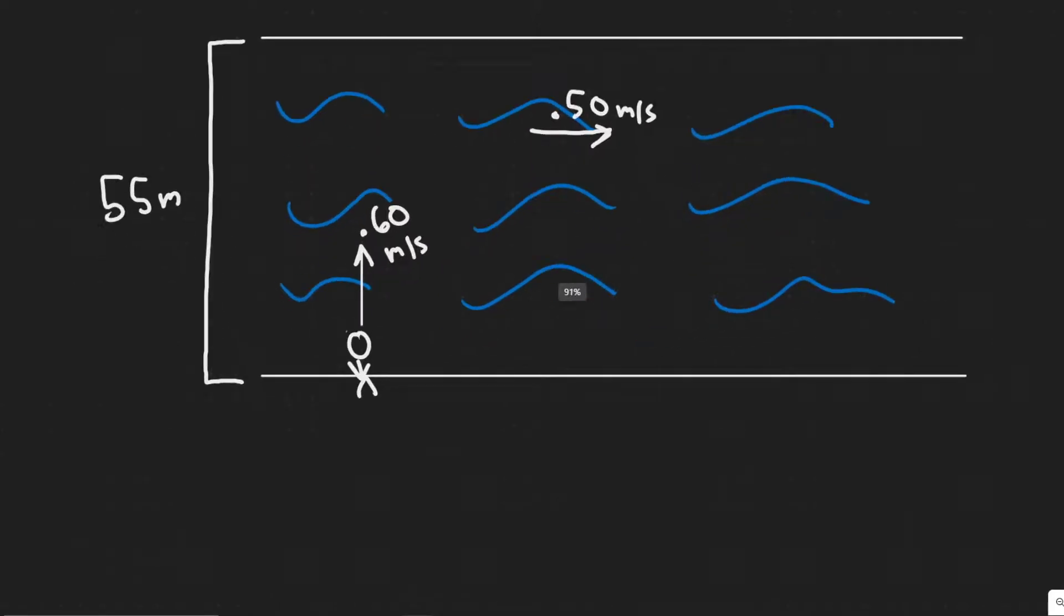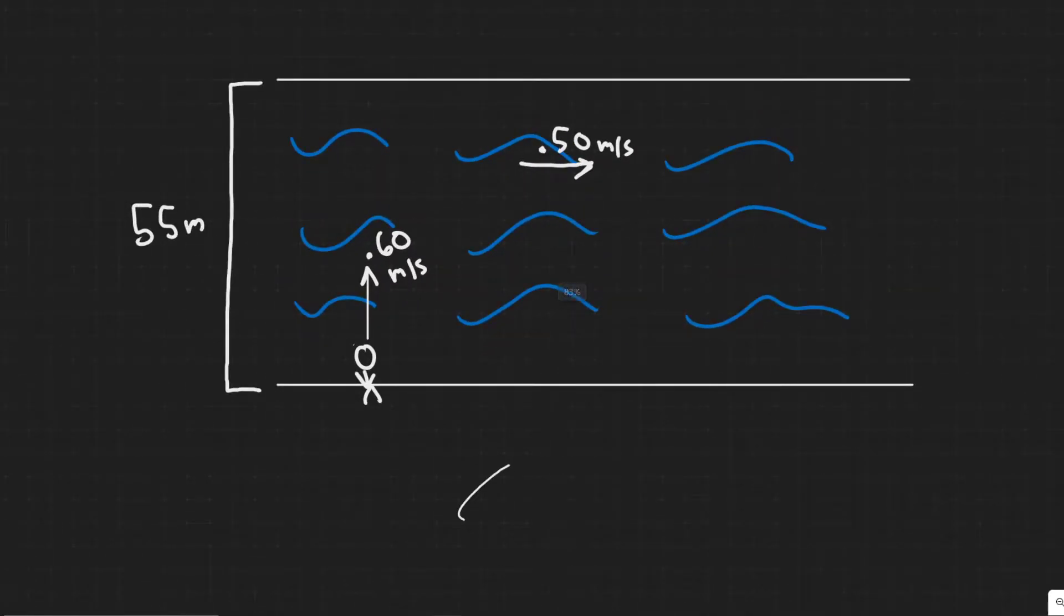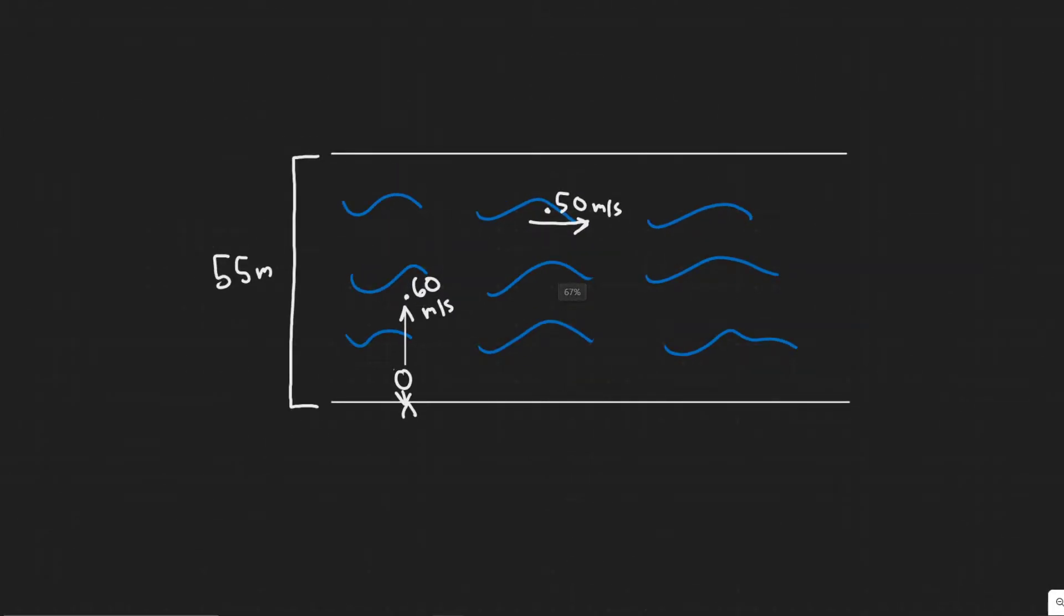So as always you want to draw what's going on. So we have this swimmer and they're going to be traveling across this river here which is 55 meters wide. We also know that the current is going to be traveling 0.5 meters per second basically this way.